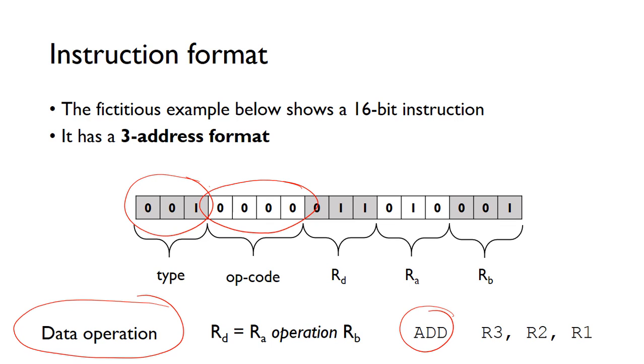In this example, Rd, the destination register, is three. Ra is two, and Rb is one. That essentially means we'll take the value stored in R2, add it to the value in R1, and store the result in R3.